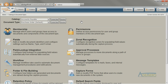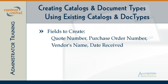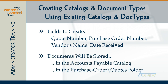In this example, we are going to add a document type for quotes to the accounts payable catalog. For each quote, I want to track the quote number, the purchase order number, the vendor's name, and the date the quote was received. And I want it to be stored in the same folder as the purchase order under the accounts payable catalog in catalog browser.